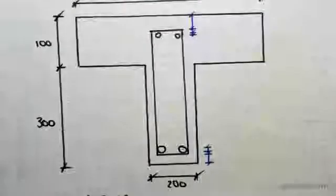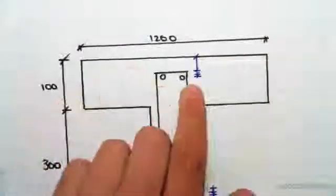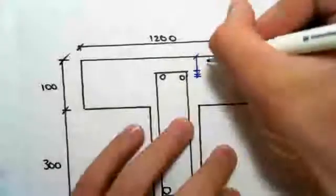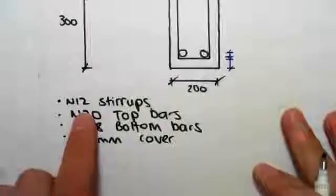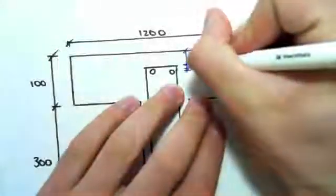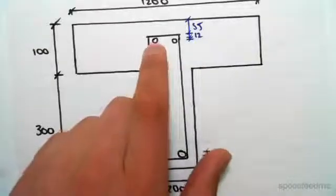So as I say, we first need to find the distance to the bars from the center. So as you can see here, I said we have a 35 mil cover, so that distance there will be 35 mils. The bars are N12 bars, the stirrups, so this distance will be 12.